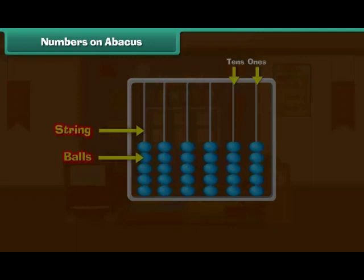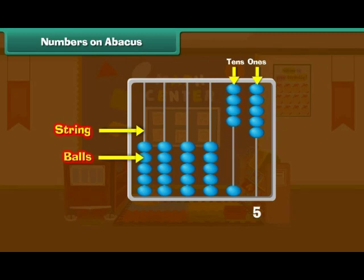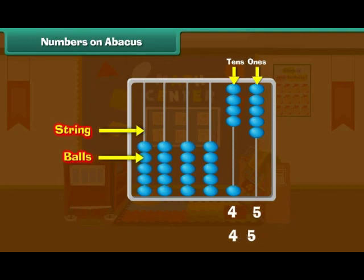Look at this abacus. It has five balls in the ones place and four balls in the tens place. Therefore, the number is 45.